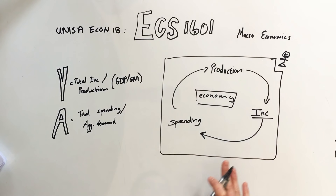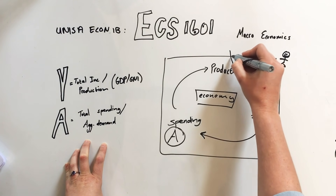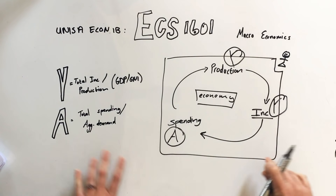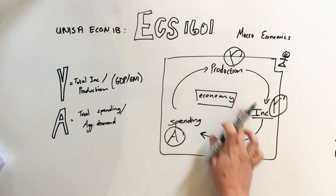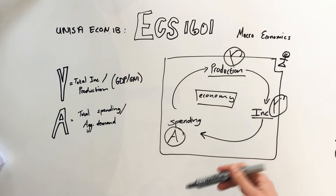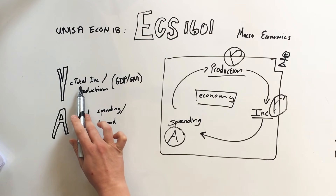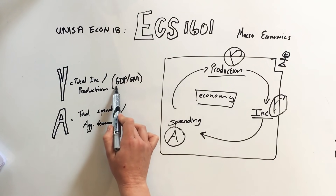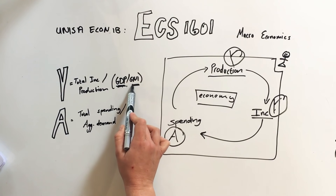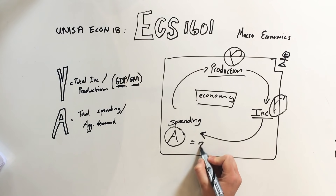Before we go to injections, note that spending is A, production is Y, and income is Y. Why is income and production both Y? Because whatever you produce you will get paid for — they assume you'll sell everything, so production equals income. When you see Y it can be total income or total production of the economy, measured with either GDP (gross domestic product) or GNI (gross national income). Spending on the other hand is not exactly equal to Y.